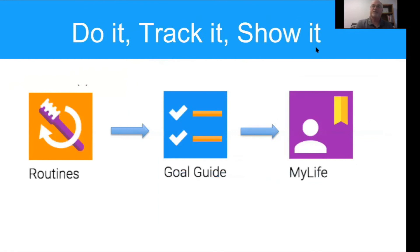The basic framework for what I'm going to show you today can be described as do it, track it, and show it — or do it, track it, and share it. This is achieved with three key applications. The first is called Routines, a way to get information about how to accomplish tasks, routines, and activities at home, at school, and in the community. Goal Guide is a way to take routine activities and track progress on them over time. MyLife is an e-portfolio application that allows you to share anything you've tracked in Cognitopia with other people.